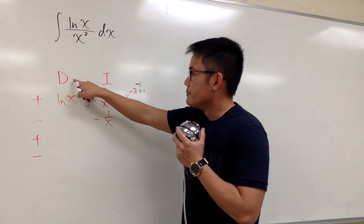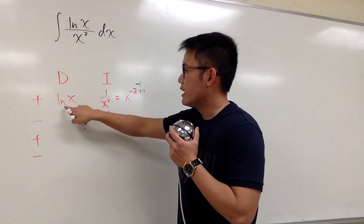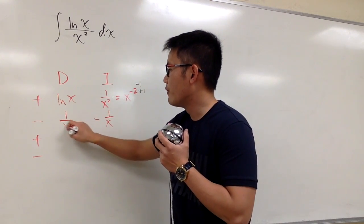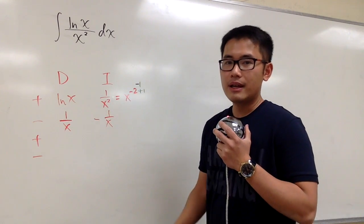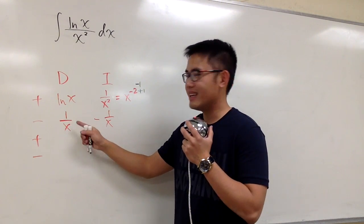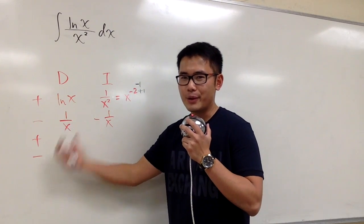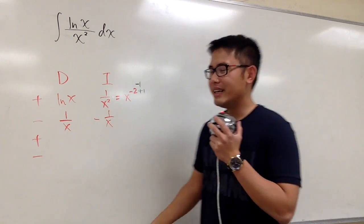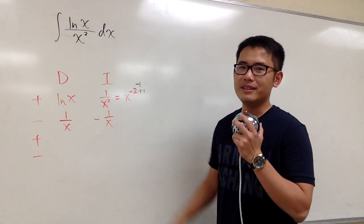And then what? I will differentiate ln(x), that will be 1 over x. Should we keep going, or should we stop? Well, if you want to keep going, as you can see, this is going to be crazier, crazier, and crazier. And likewise, this is not going to get any better neither.